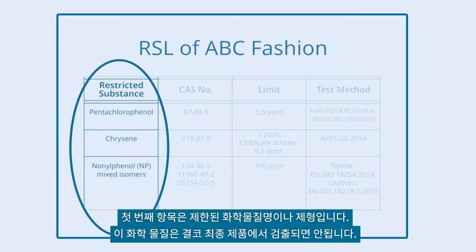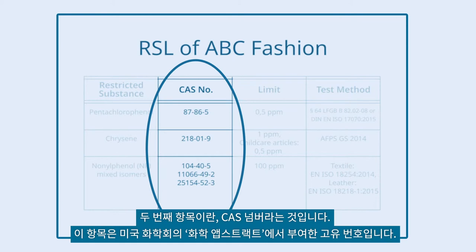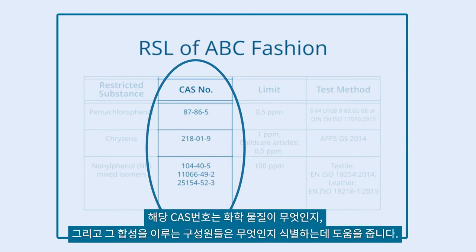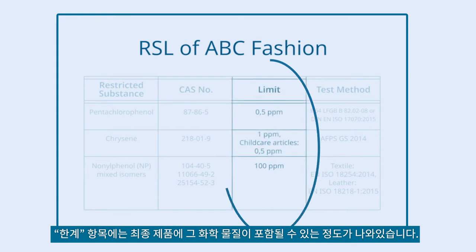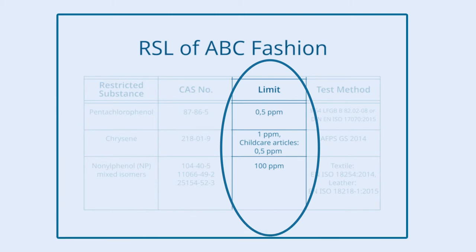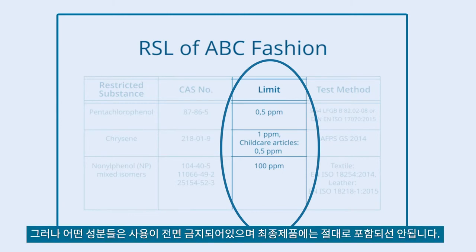The first item is the name of the restricted chemical substance or formulation, which is restricted in use or not allowed to be detected in the end product. The second item is the CAS number — a unique number assigned by the Chemical Abstracts Service of the American Chemical Society — which helps identify the respective chemical substance or components of the formulation. The limit column shows the maximum allowable and detectable amount of that substance in the finished product; some substances are completely banned and are not allowed to be found in the end product at all.